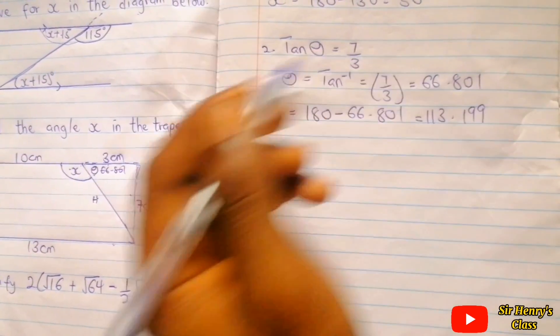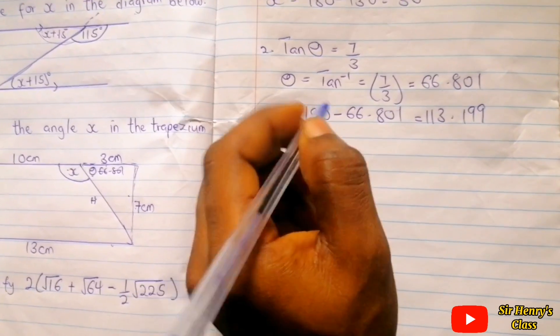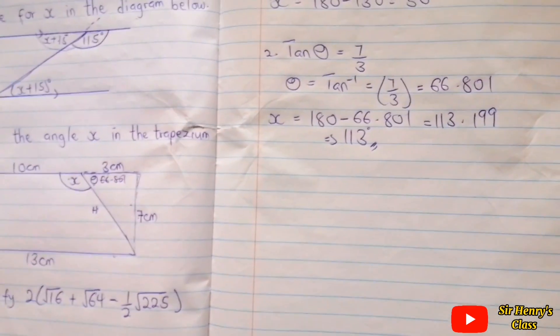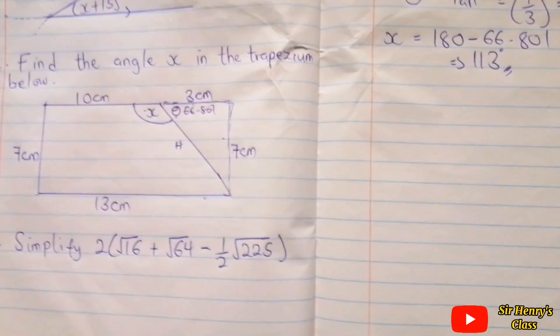Now how do you find x? We just subtract 66.801 from 180. So 180 minus 66.801 equals 113.199. We can leave this in terrific, that will be 113 degrees, and that is all.